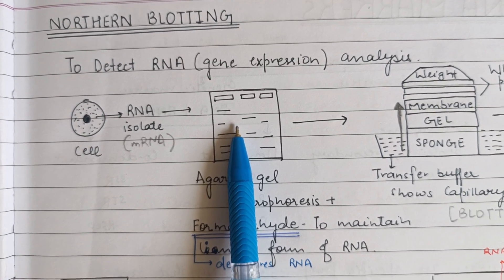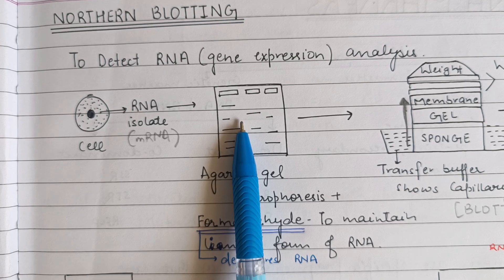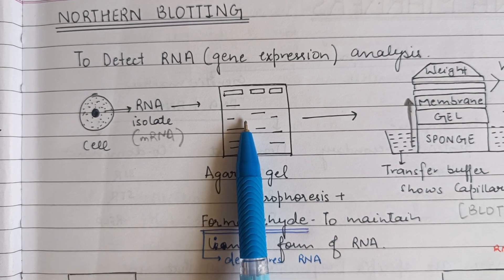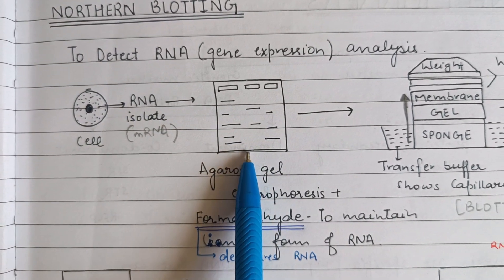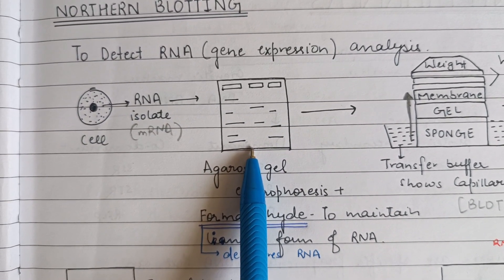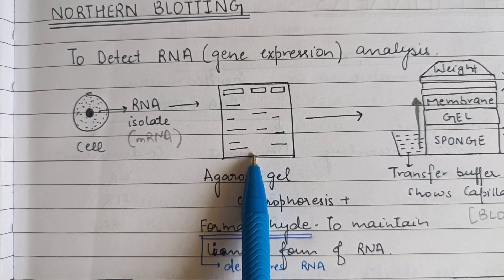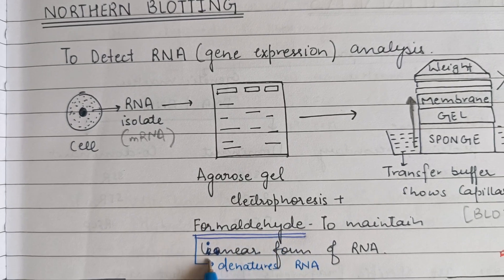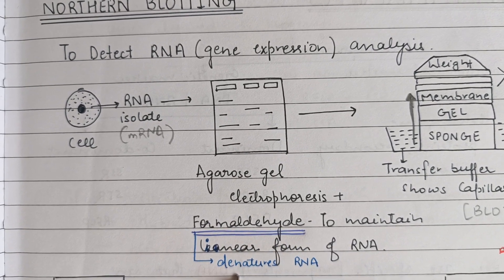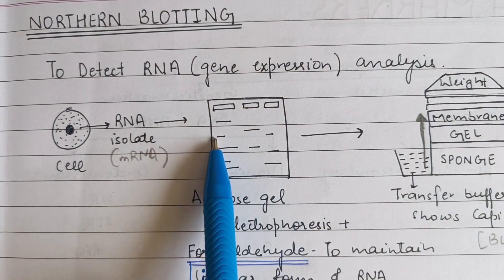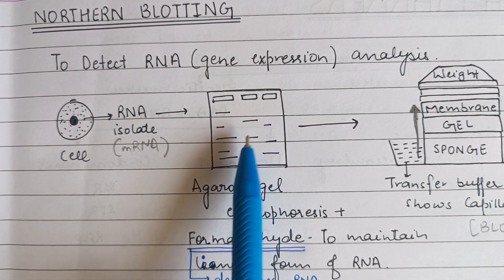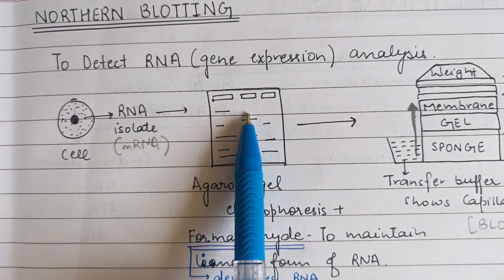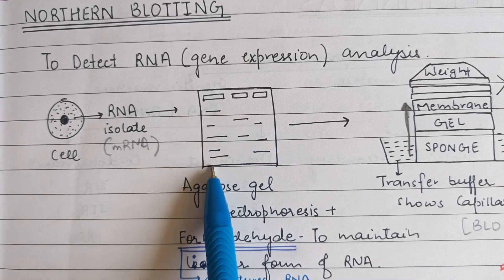Nucleic acid hybridization has already been explained in the Southern Blotting video, and we can see here how it will take place. In this agarose gel electrophoresis with formaldehyde added to maintain the linear form and denature the RNA, we can see the strands of RNA separated on the basis of their sizes — the lightest band at one end and the heaviest at the other. Since formaldehyde was added, the RNA is already denatured.